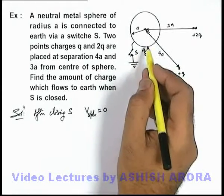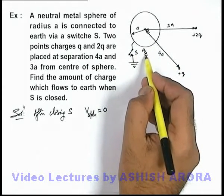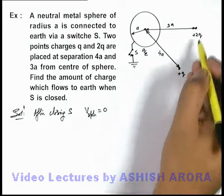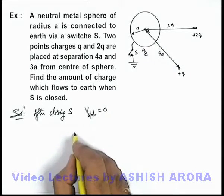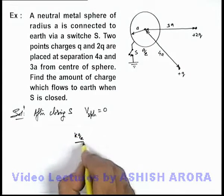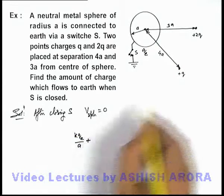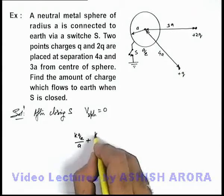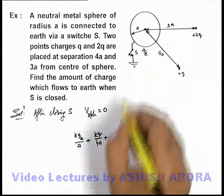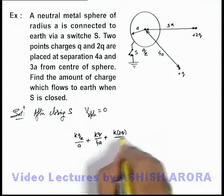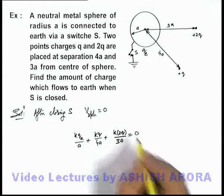Now it is due to the three charges: one is q_e that supplied by earth, due to this plus q_e, due to this plus 2q. So here we can directly write potential of sphere will be k·q_e by a, plus due to this plus q it is k·q by 4a, plus due to this plus 2q it will be k·2q by 3a and this should be equal to zero.